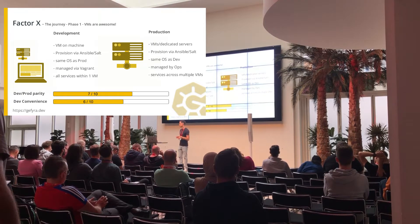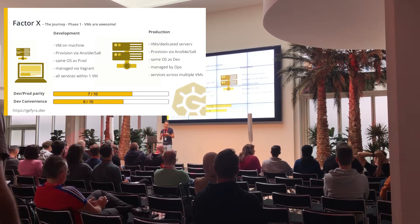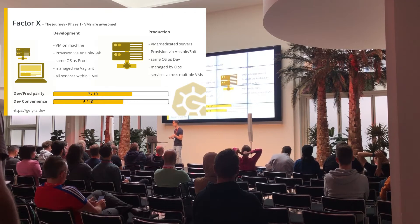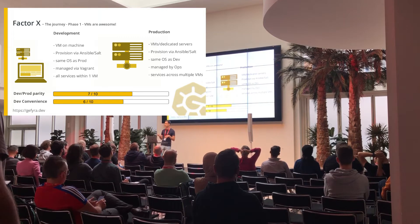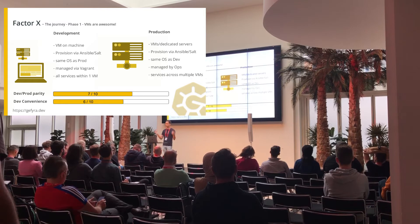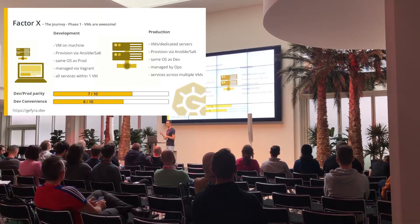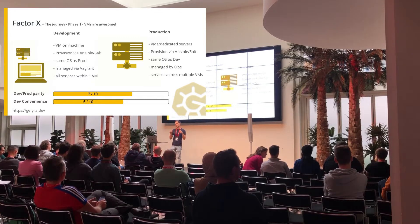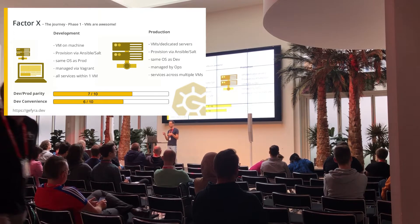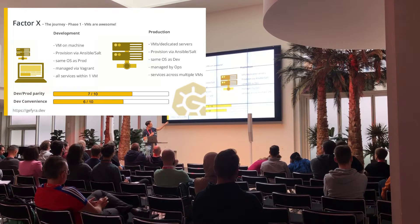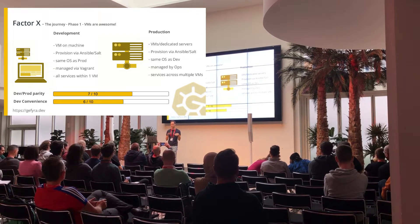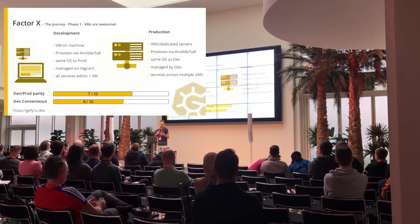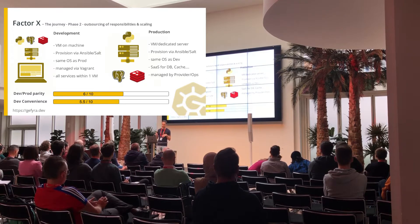In the beginning we started out building our software on top of virtual machines — everything in one VM: our Postgres database, the cache backend, and the actual application, all managed by Vagrant and provisioned through Ansible, Salt, or maybe some bare scripts. In production it was basically the same, using some AMI or similar image. The main difference was that we distributed the application across multiple VMs. Dev-prod parity and dev convenience were both reasonably good at this stage.